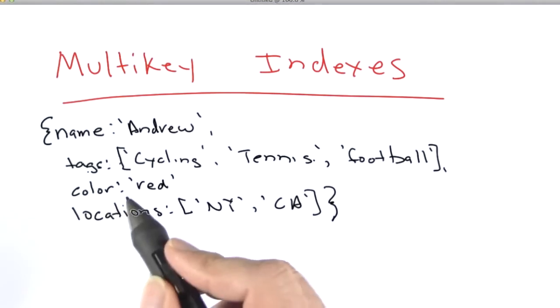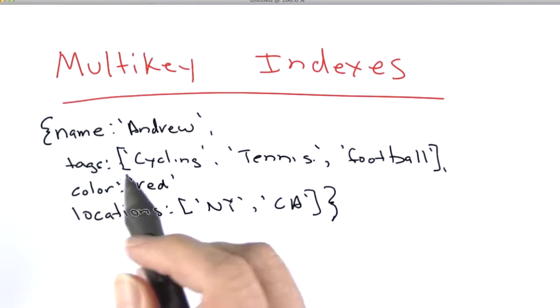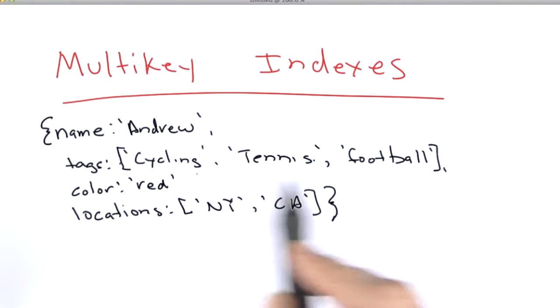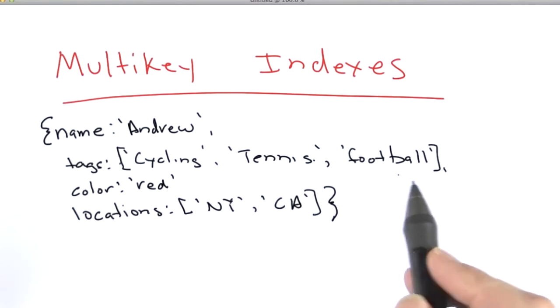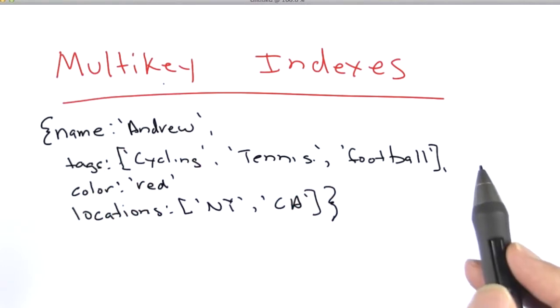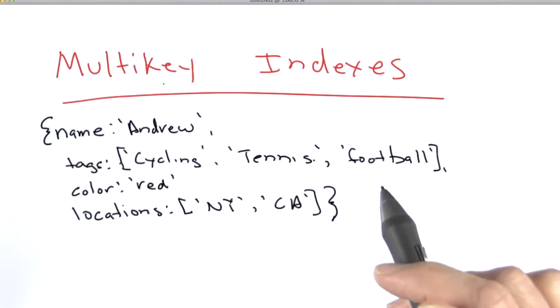Now MongoDB supports adding an index on a key whose value might be an array. And if the value is an array, what MongoDB does is it creates what's called a multi-key index. Rather than having a single index point per document, there are multiple index points, one for each of these elements in the array.